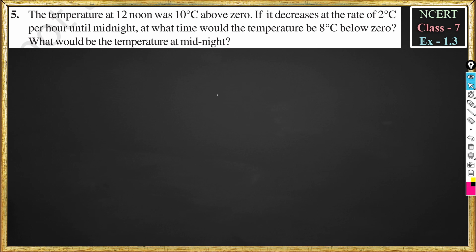Exercise 1.3, Question number 5. The temperature at 12 noon was 10 degrees Celsius above zero, that is plus 10 degree Celsius. It decreases at a rate of 2 degrees Celsius per hour, which means at 12 noon if it is 10 degree C,